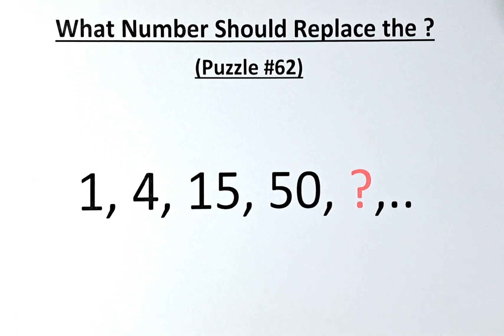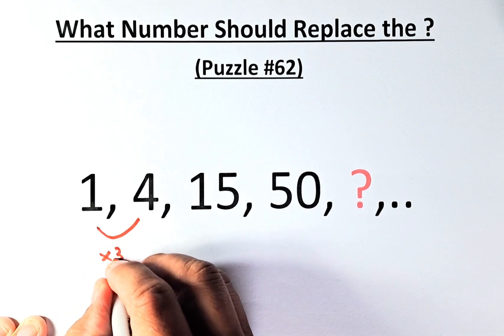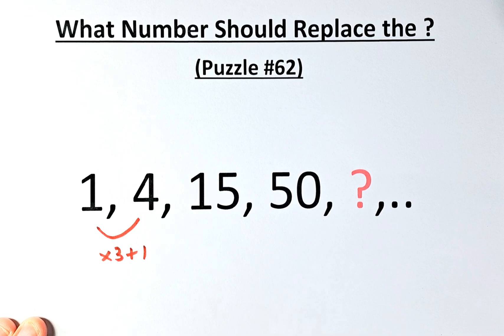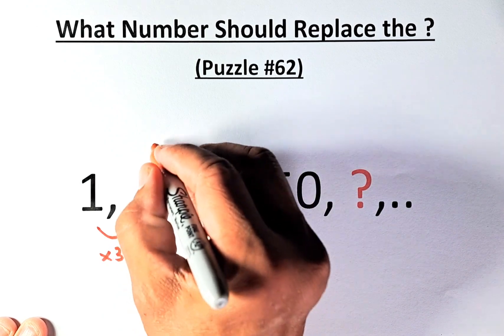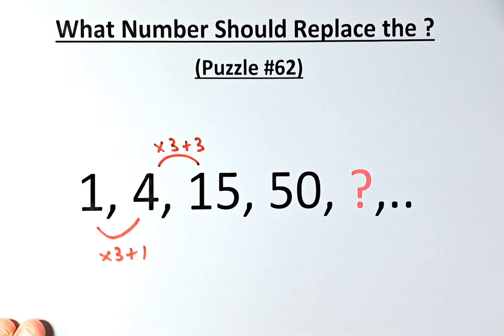So to get from 1 to 4, we're going to multiply by 3 and add 1. So 1 times 3 is 3, 3 plus 1 is 4. From 4 to 15, we're going to do the same technique. We're going to multiply by 3 and this time add 3. So 4 times 3 is 12, 12 plus 3 is 15.